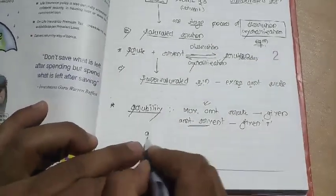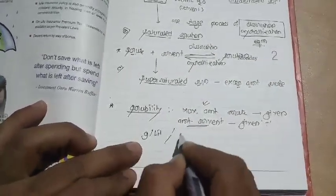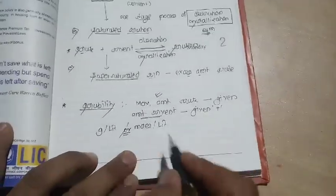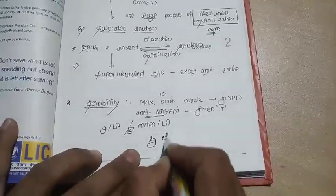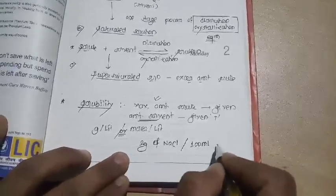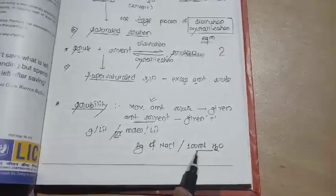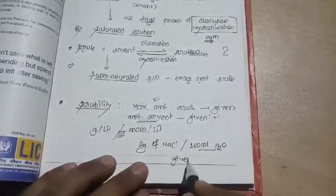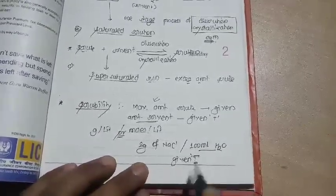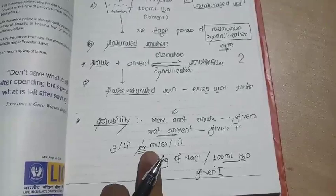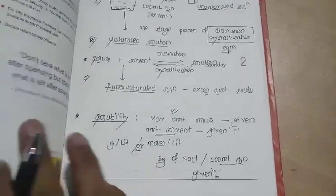Solubility can be expressed in gram per liter or moles per liter. For example, if you consider 2 grams of NaCl dissolved in 100 ml of water at a given constant temperature, this is a simple way to express solubility either in gram per liter or moles per liter.